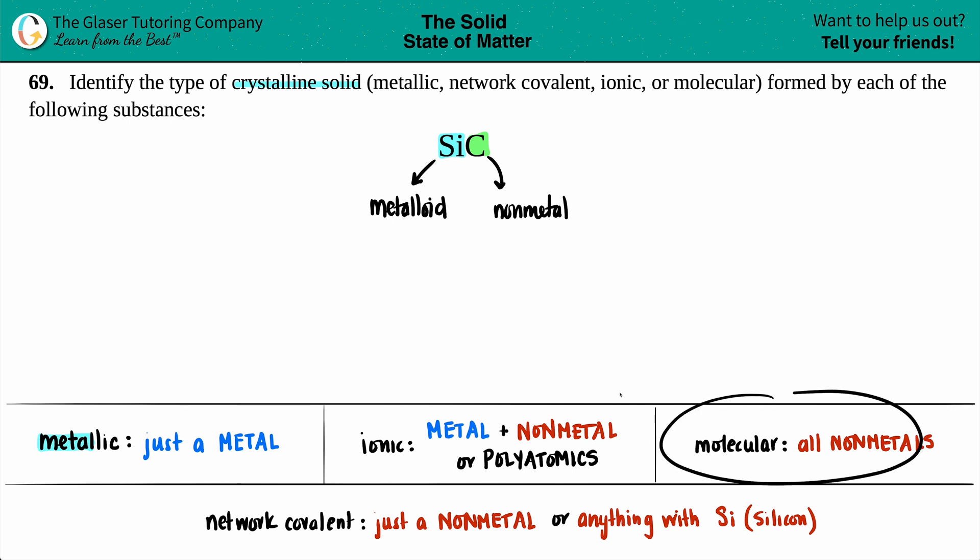Now, molecular crystalline solids come from molecules, and remember, molecules is the word that we use when we talk about covalent compounds. So covalent compounds, you have to see all non-metals. But just like that, the issue here is silicon is a metalloid, it's not necessarily a non-metal. So I wouldn't classify SiC as a molecular crystalline solid.